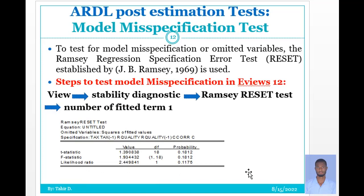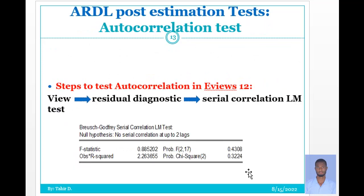The other issue is model misspecification. To test for model misspecification or omitted variables, the Ramsey Regression Equation Specification Error Test (RESET) is used. The steps in EViews: View, then Stability Diagnostics, then Ramsey RESET Test — set the number of fitted terms to one or two. The probability of the t-statistic, F-statistic, and likelihood ratio should be greater than your significance level of five, ten, or one percent. If so, there is no misspecification in the model.